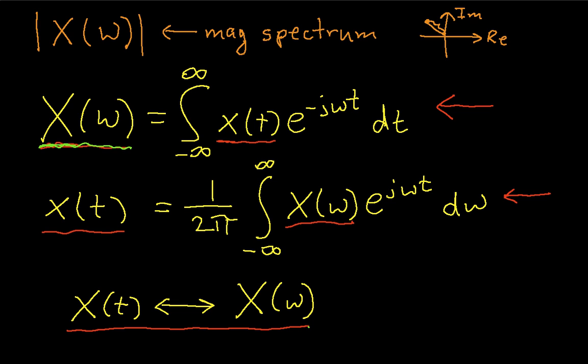We will also define what we call the phase spectrum. And this is the angle that the complex number makes with the real axis.